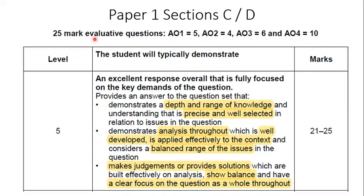The 25 marks break down as follows: five marks for AO1 which is knowledge, four marks for AO2 which is application, three marks for AO3 which is analysis, and the vast majority for AO4 which is evaluation. For your AO1 marks, you need to demonstrate depth and range of knowledge that is precise and well selected — bringing in relevant models like Maslow or Herzberg, or Greiner's model of growth — but only where appropriate to the question.